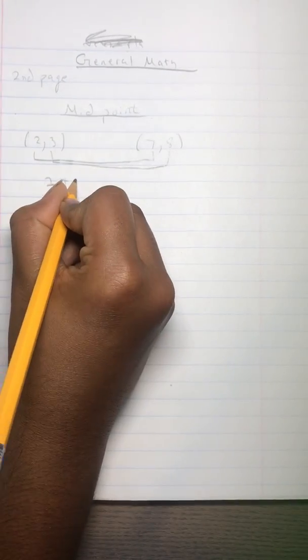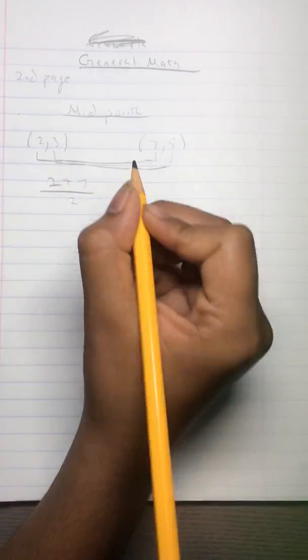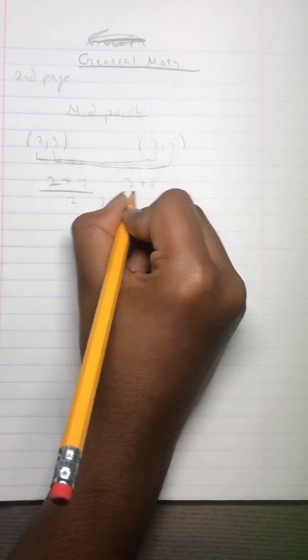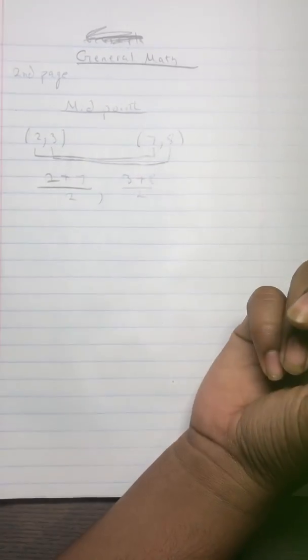So we have 2 plus 7 over 2, 3 plus 8 over 2. That would be the answer.